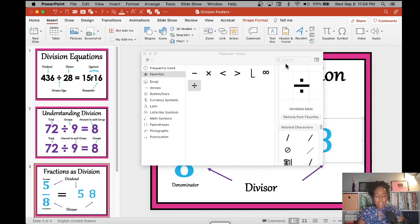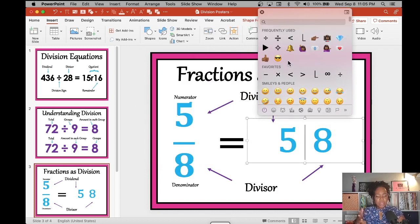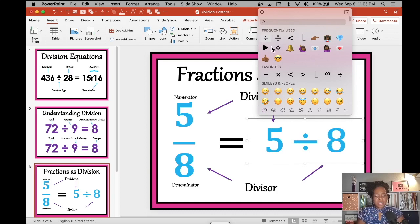So once it's there, we're going to go back up to the icon at the top of this menu so it goes back to just seeing the emojis and the symbols. And I'm going to find my division sign and it inserts right into my expression where I have my cursor.